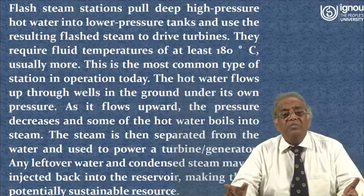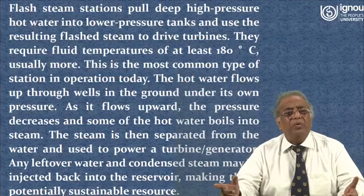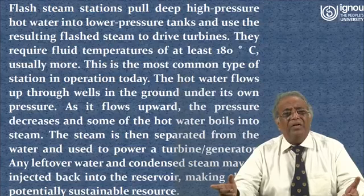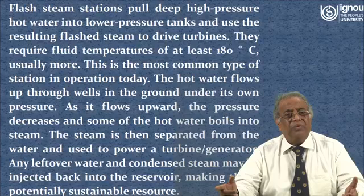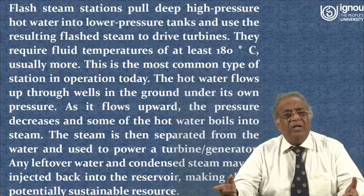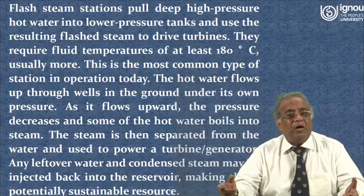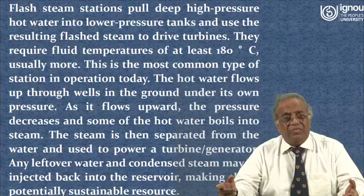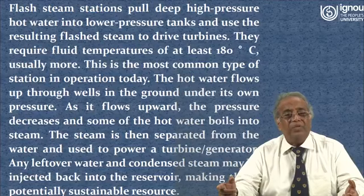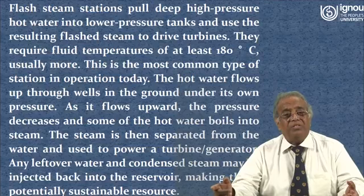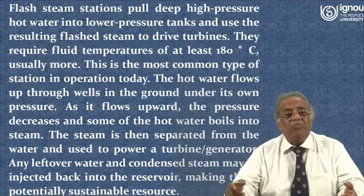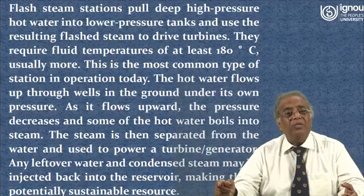Flash steam stations pull deep, high pressure hot water into lower pressure tanks and use the resulting flashed steam to drive turbines. They require fluid temperatures of at least 180 degree centigrade, usually more. This is the most common type of station in operation today. The hot water flows up through wells in the ground under its own pressure, and as it flows upward the pressure decreases and some of the hot water boils into steam. The steam is then separated from the water and used to power a turbine generator. Any leftover water and condensed steam may be injected back into the reservoir, making this a potentially sustainable resource.